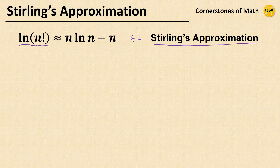In that case, ln(n!) can be approximated as n·ln(n) - n, which is algebraically easier to handle since it does not contain a factorial.